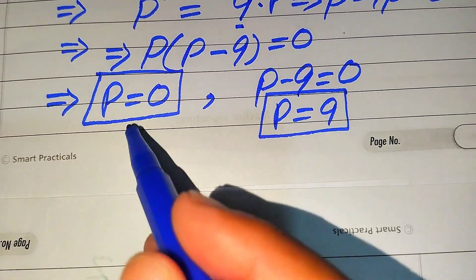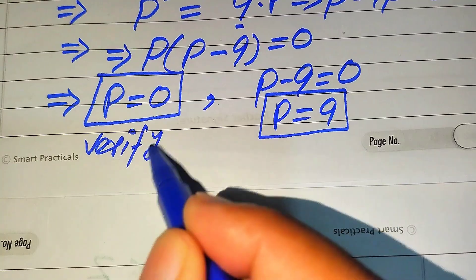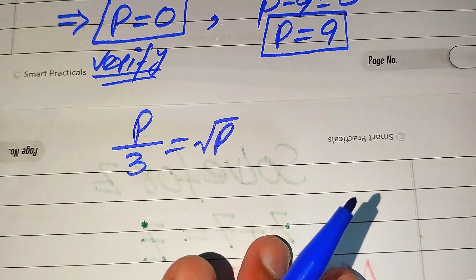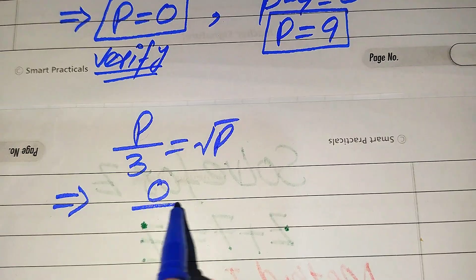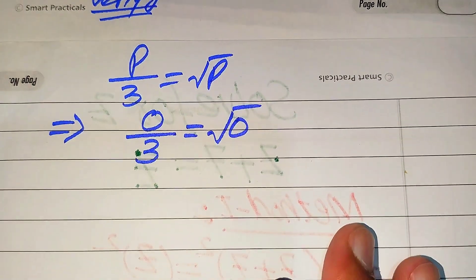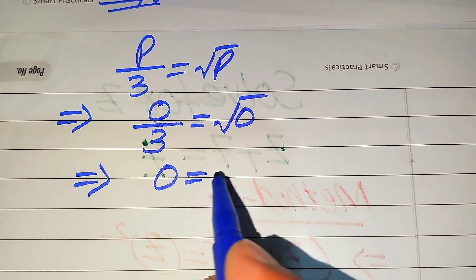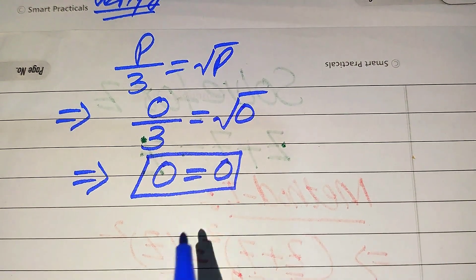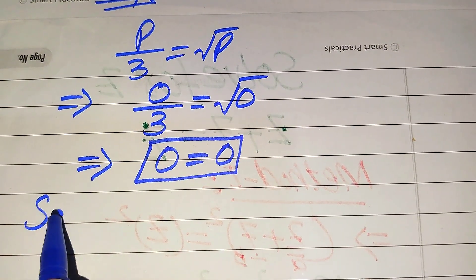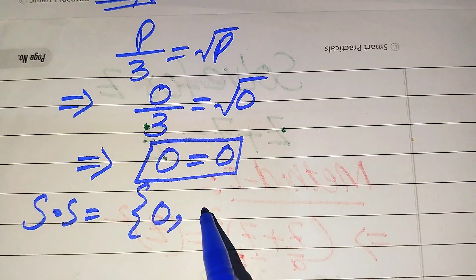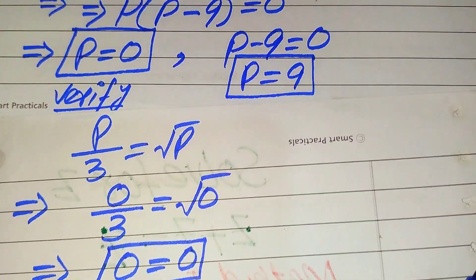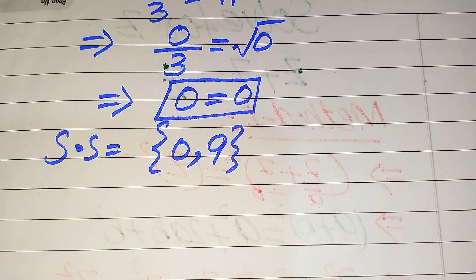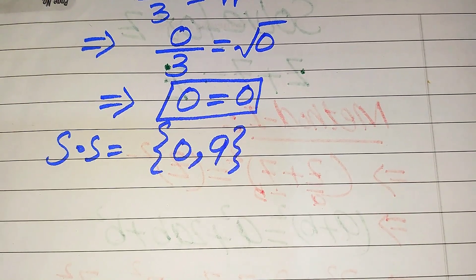Now we verify p equals 0. Substituting into the original equation: 0 divided by 3 is equals to square root of 0. The left hand side gives 0, and the right hand side also gives 0. So p equals 0 also satisfies the given equation. Therefore the solution set in the second method is {0, 9}. Thank you so much for watching this video — please subscribe to my channel for more exciting videos.